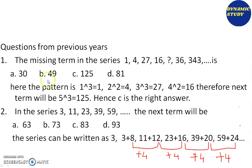Now, let's see questions from previous years. The missing term in the series 1, 4, 27, 16, ?, 36, 343... The options were 30, 49, 125, and 81. First of all, let's check the pattern here. 1 is 1³, then 4 is 2², then 27 is 3³, then 16 is 4². So what happens? 1 cube, 2 square, 3 cube, 4 square—alternating between cube and square.